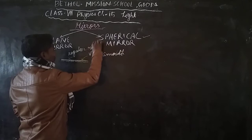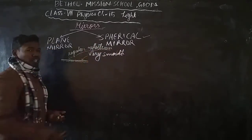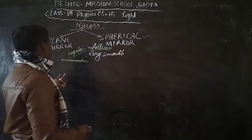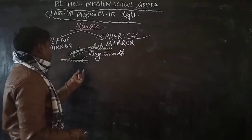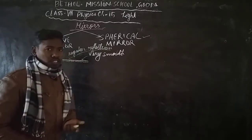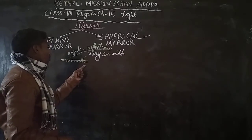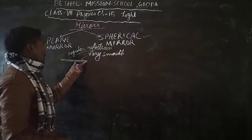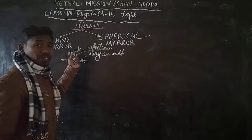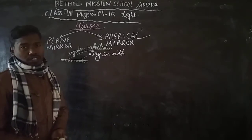This regular reflection is responsible for image formation. A very, very smooth surface that is polished can be termed as a mirror, because it provides regular reflection, and since it provides regular reflection, image formation is very, very nice.